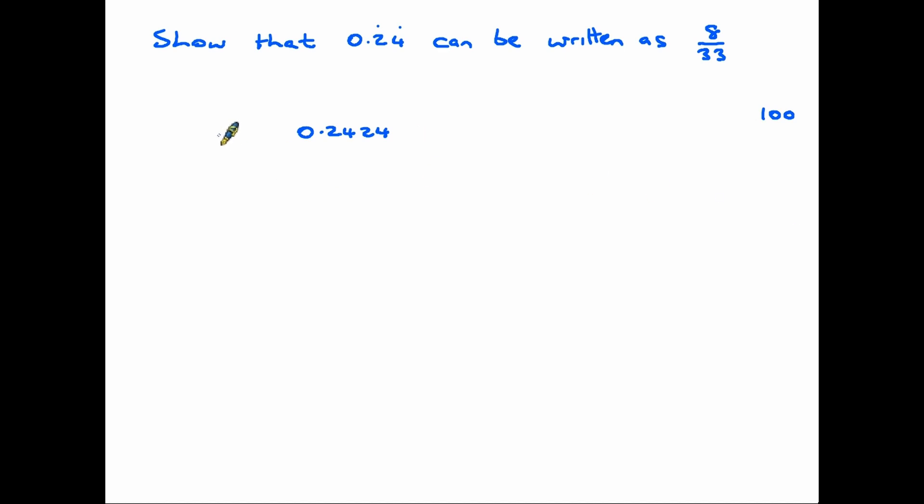This actual number can be written as 0.2424 and so on. And this is what we need to do. We don't have to put too many on there. Just a few digits. And what we do, like every example, we call that the number n. We then need to find 100n. So we're going to do that by multiplying this number by 100. So the decimal point moves two places. So we end up with 24.24. And that number continues.